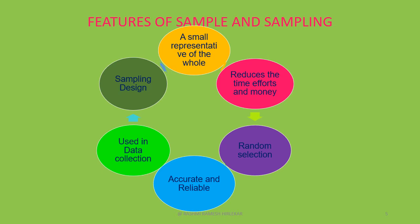The second feature is time, efforts, and money. Sampling reduces the time, efforts, and money of the researcher on data collection without any adverse effect on its quality. Sampling is needed as it saves time and money.